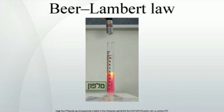History. The law was discovered by Pierre Bouguer before 1729. It is often attributed to Johann Heinrich Lambert, who cited Bouguer's Essai d'optique sur la gradation de la lumière, Paris, 1729, and even quoted from it in his Photometria in 1760. Much later, August Beer extended the exponential absorption law in 1852 to include the concentration of solutions in the absorption coefficient.